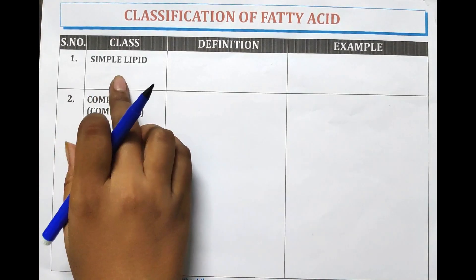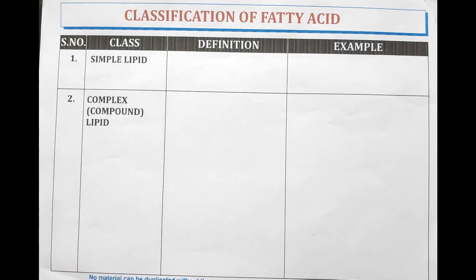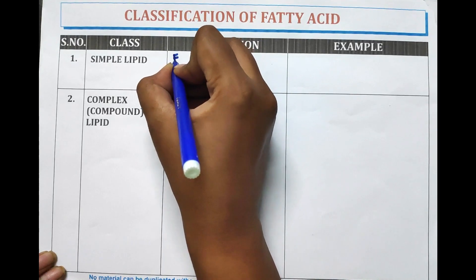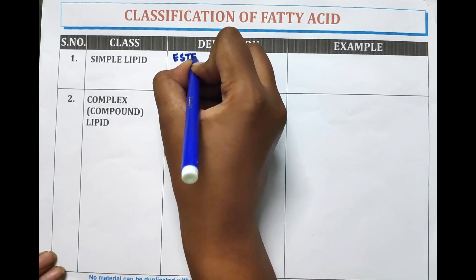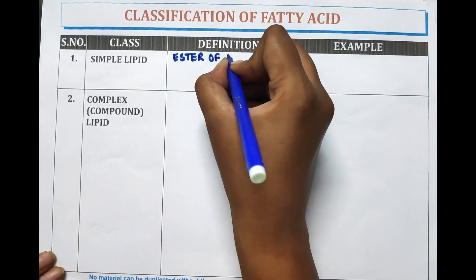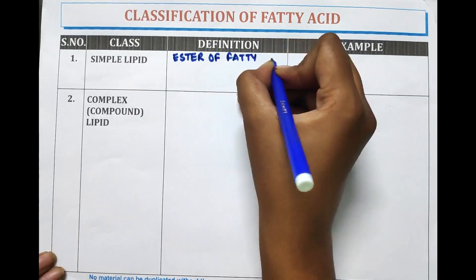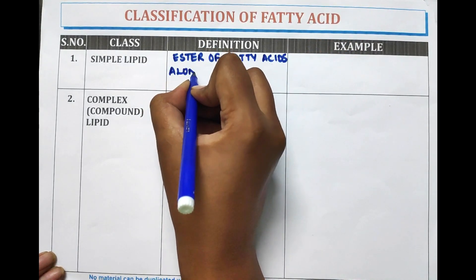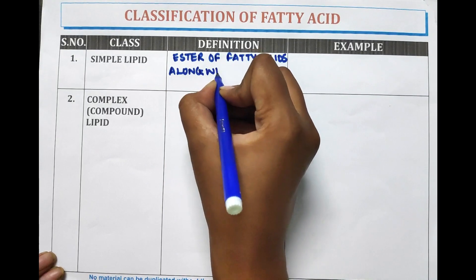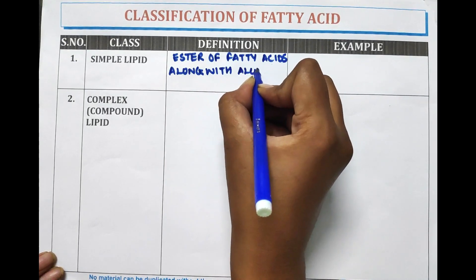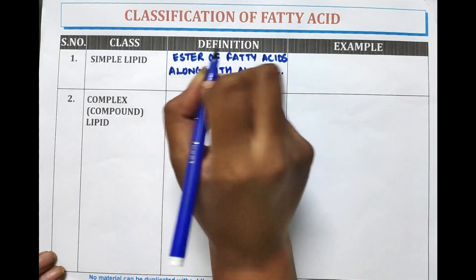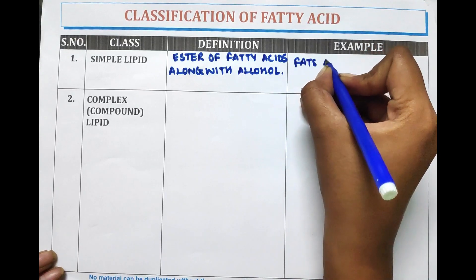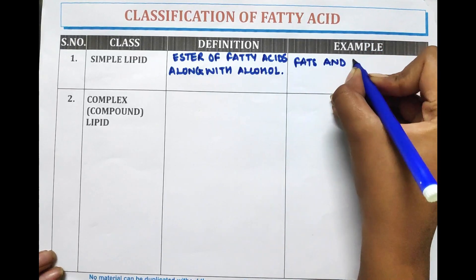Classification: Simple Lipid, Complex Lipid, and Derived Lipid. Simple Lipid means that esters of fatty acids along with alcohol are present. It is known as Simple Lipid. Examples are Fats and Waxes.